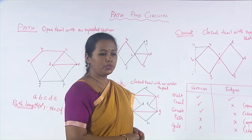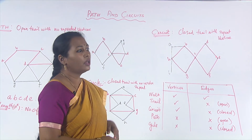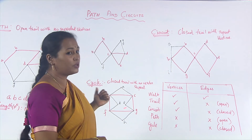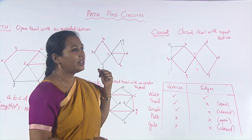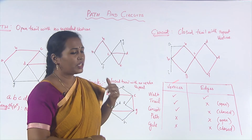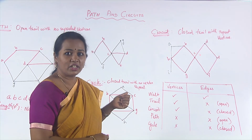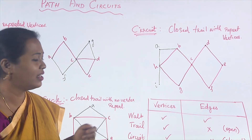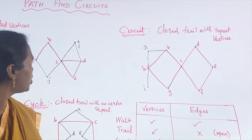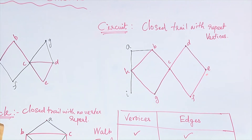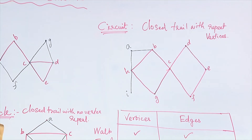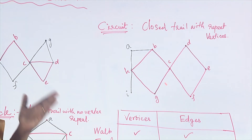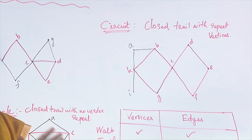We shall see the circuit definition. A circuit is said to be a closed trail with repeated vertices. In a cycle there are no repeated vertices, but in a circuit you have repeated vertices. Starting at H: H, B, B, C, C, F, F, E, E, D, D, C, C, G, G, H — you can see that vertex C is repeated at least two times. Therefore this is an example of a circuit. It might not be a cycle, but it is a circuit.